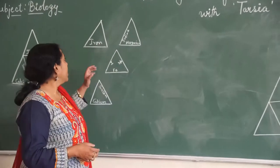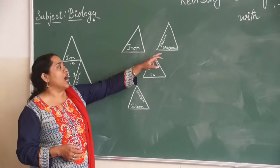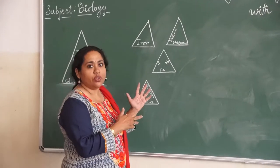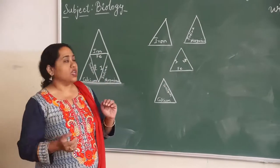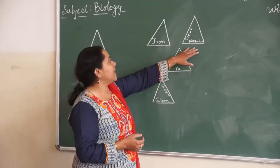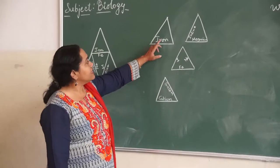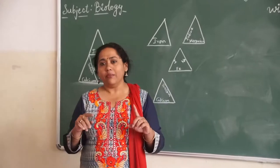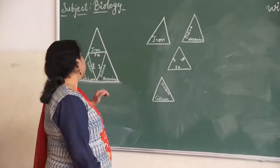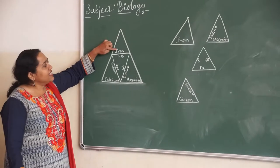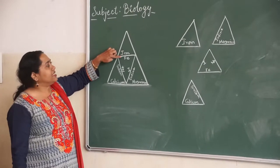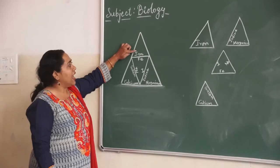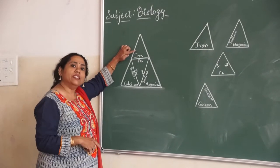I am going to give you small triangular cards. There are 4 triangular cards and in each triangular card there is something written. You have to arrange these cards and make a single triangle, such that the sides of the triangle have matching words. So once I arrange these triangles into a single triangle, this is Tarsia. This Tarsia is based on elements and symbols.